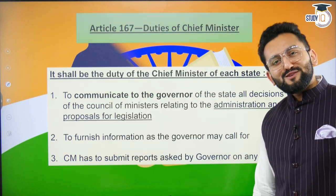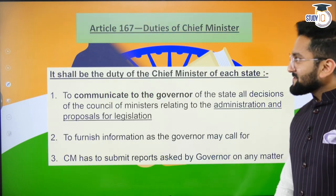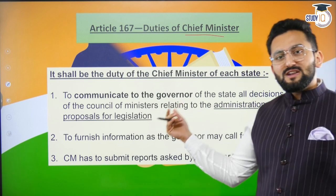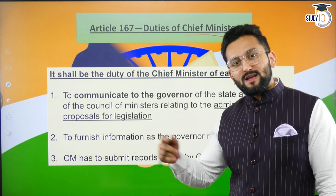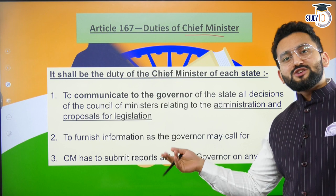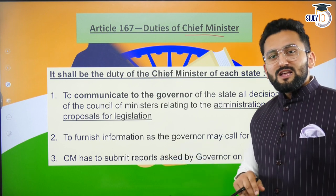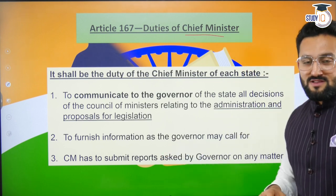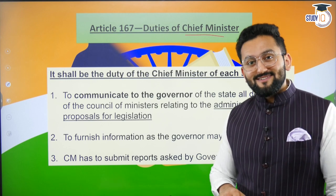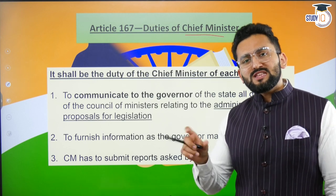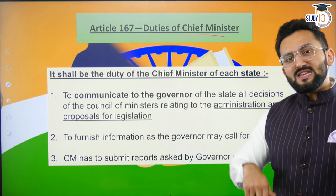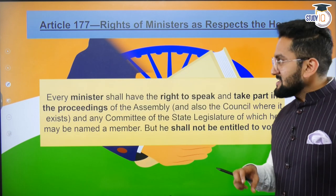Article 167 — duties of Chief Minister: to communicate about administrative actions, to furnish details of legislative policies which the government is planning. The CM is like a bridge between the State Council of Ministers and the Governor.